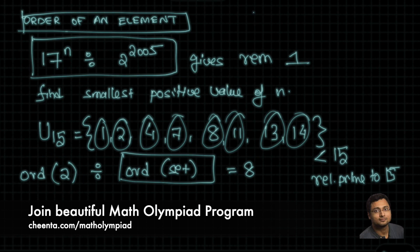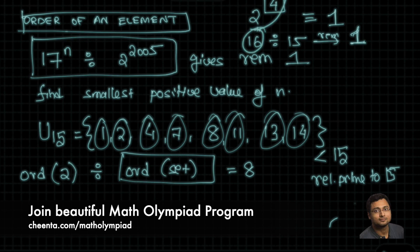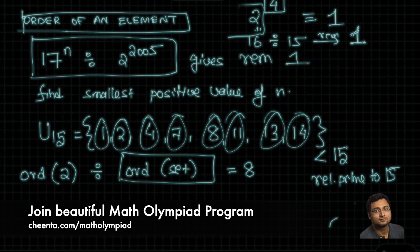The order of 2 is the smallest value to which, when 2 is raised, gives remainder 1. The value is 4, because 2 to the power 4 is 16, and when you divide 16 by 15 the remainder is 1. So the order of 2 is 4, and notice that 4 divides 8.